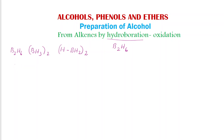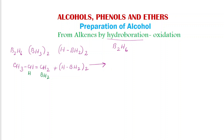So we will write the reaction with a specific example. We take CH3CH=CH2 and react it with diborane. What we get is: hydrogen will be added to one carbon and BH2 is added to the other carbon. So the product obtained is CH3-CH2-CH2-BH2. This is the first product obtained by the reaction of the alkene with diborane.